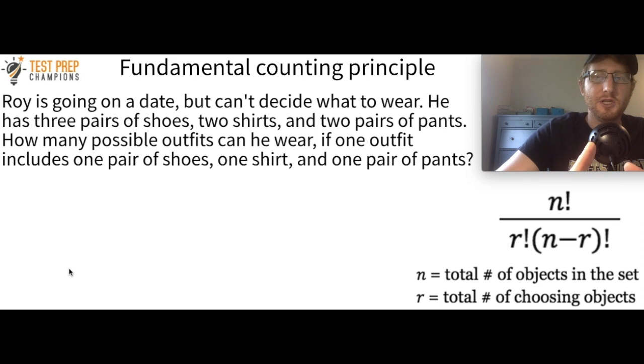So here's another case of combinations when we're combining more than one type of item. Roy is going on a date, but can't decide what to wear. He has three pairs of shoes, two shirts, and two pairs of pants. How many possible outfits can he wear if one outfit includes one pair of shoes, one shirt, and one pair of pants? So I'll let you pause the video, try to figure this out. And whenever you're ready, we'll go over the answer.